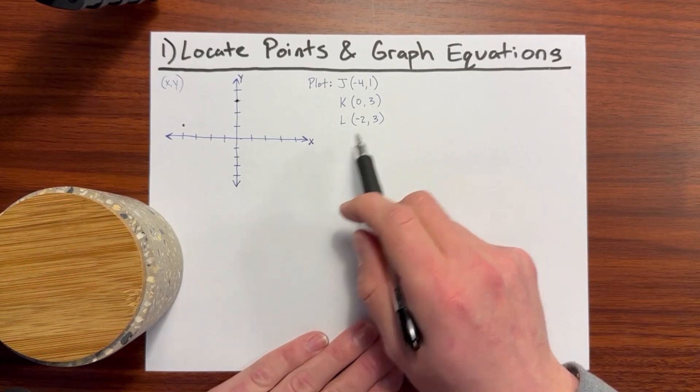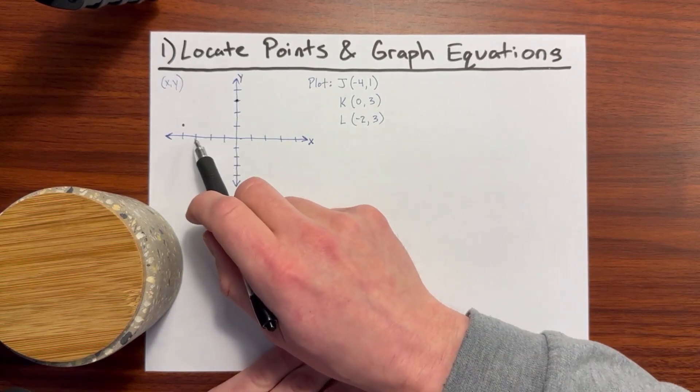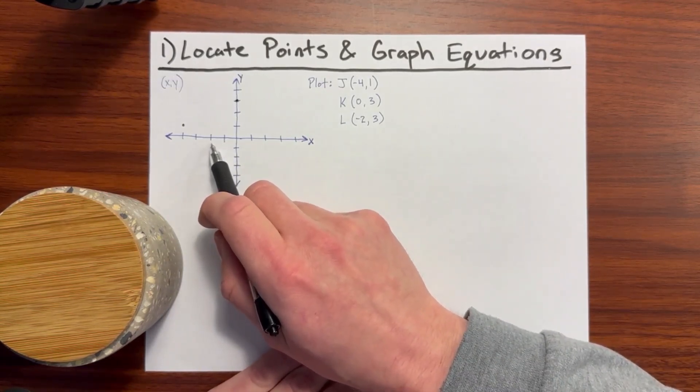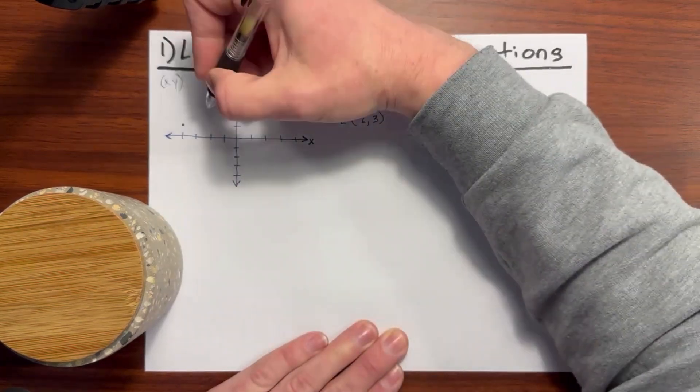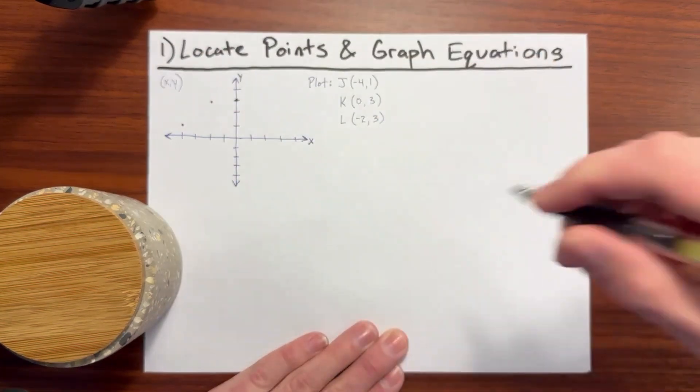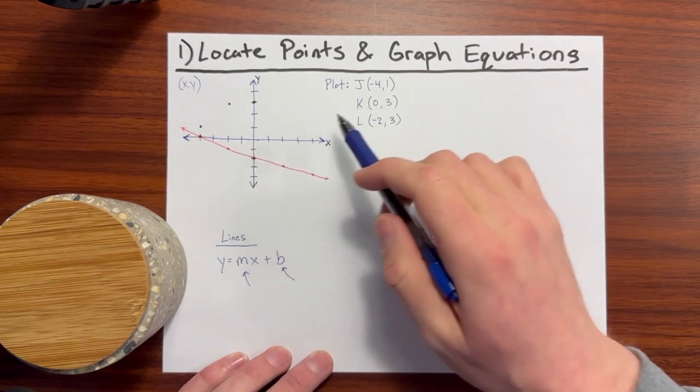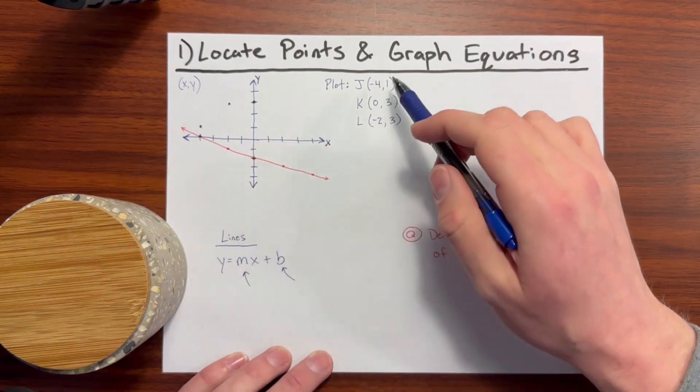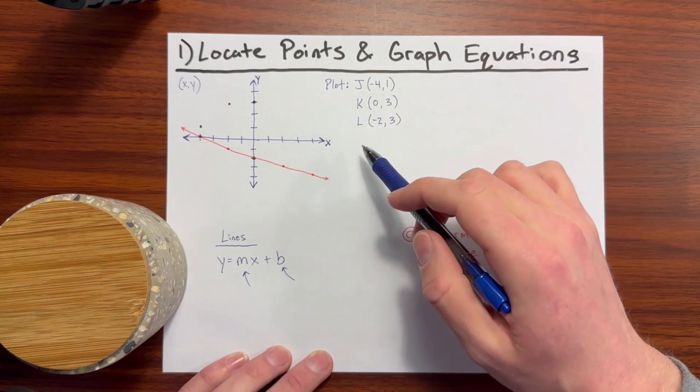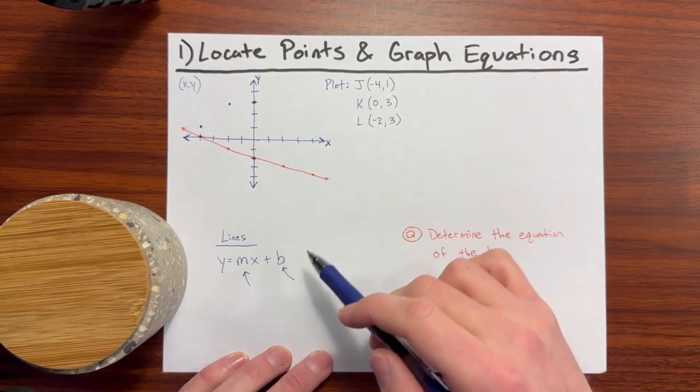For negative 2, positive 3, we'll move back 2 here and then up 3. Right there. On the GED, the problem will be in reverse of what we just did, where it'll show you the graph and ask you which points are correct in the multiple choice possible answers.